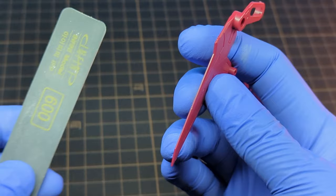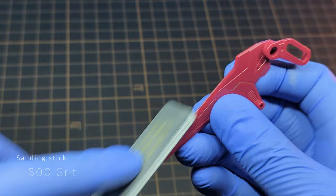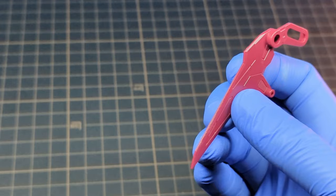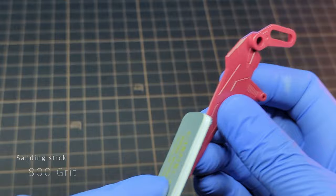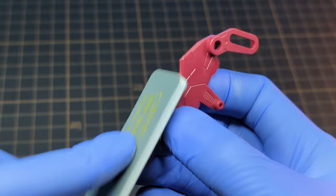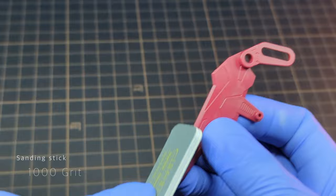For nubs that will be visible once assembled, I will file them down with increasing grits of sanding sticks. Nubs that won't be visible once assembled, I will leave them as they are. To remove nubs, I start sanding them down with a 600 grit sanding stick to remove much of the nub, then move to 800 grit and then 1,000 grit sanding stick to smoothen it all out.